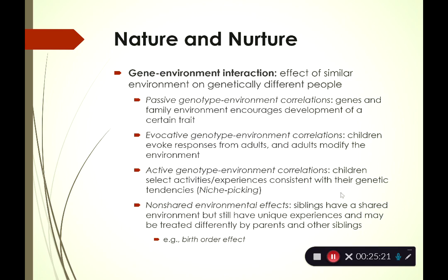Third is active genotype-environment correlation — when the child selects an activity they are good at, possibly something the parents have no experience with. Both my boys like sports; my husband and I have no real experience with that. My younger son is going to do a golf tournament — I have no frame of reference for this — he's pushed for it based on his own interests. That's active genotype-environment correlation, sometimes called niche picking — you're picking your niche.